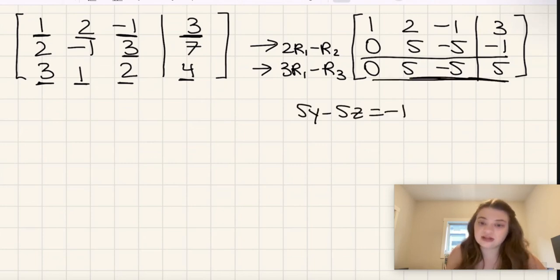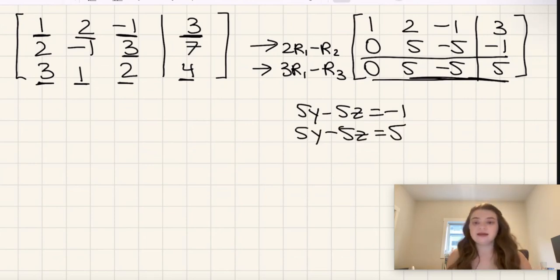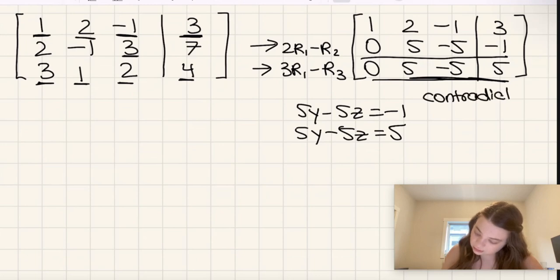And then this third equation here is essentially saying that 5y minus 5z is equal to 5. Now that's a complete contradiction. This new matrix that we found is a contradiction. And so what does that mean if we have a contradiction? That means that there are no solutions.